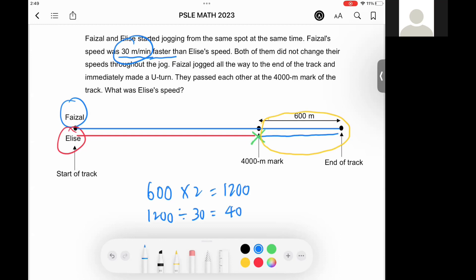Because every minute he runs 30 meters more, in 40 minutes he will run a total of 1200 meters more than Elise. So this 40 here represents the duration that they have been jogging.